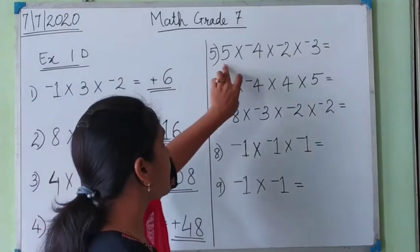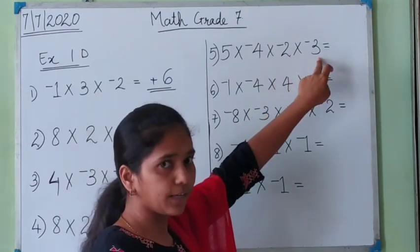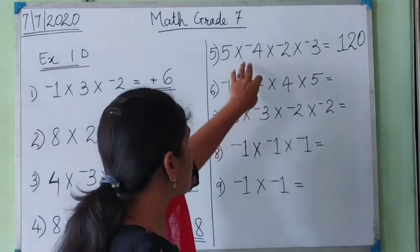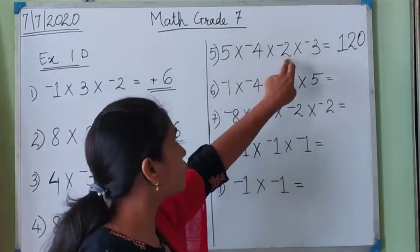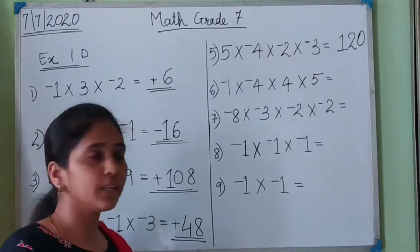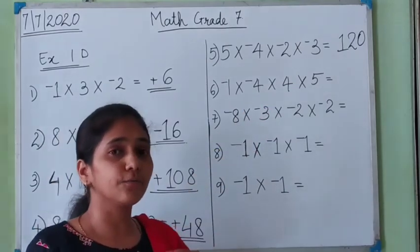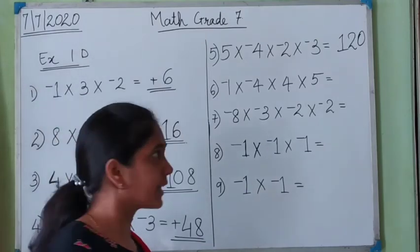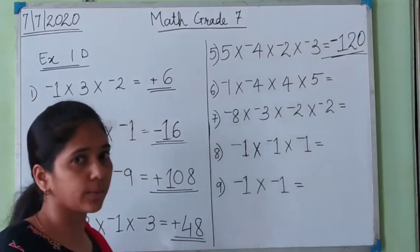In the fifth example, 5 into 4 is 20, 20 into 2 is 40, and 40 into 3 is 120. Now let's check the sign. The negative numbers are 4, 2, and 3 — all three are negative, so there are 3 negative numbers. Three is odd, so by our rule the sign of the answer is negative. The answer is negative 120.